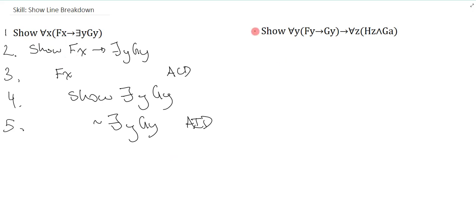For this next example, let's also pretend this is just line one, and I have this show line. Now remember, show line breakdown is always uniquely dictated by what the main connective or operator is, and in this case it's the conditional. So don't be fooled. Just because it starts with the universal doesn't mean it's a universal. You still need to read the notation and be careful about this.